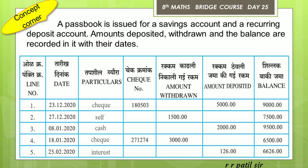1,500 is withdrawn, so what is the balance at the end? 9,000 minus 1,500 gives us 7,500 at the end.